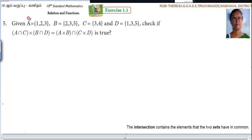Now listen here, given A equal to 1, 2, 3, B equal to 2, 3, 5, C equal to 3, 4, D equal to 1, 3, 5. Check if A intersection C cross B intersection D equal to A cross B intersection C cross D is true.